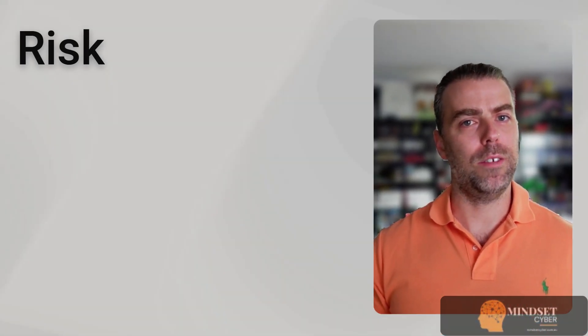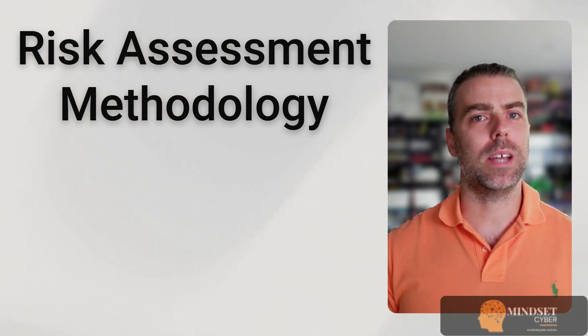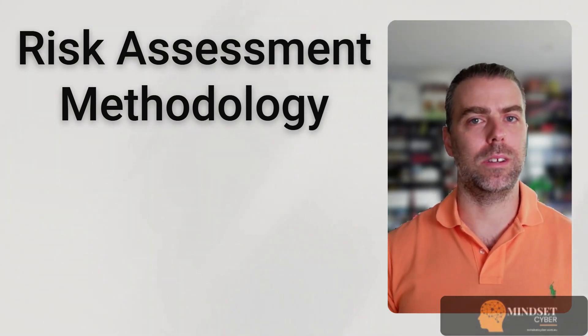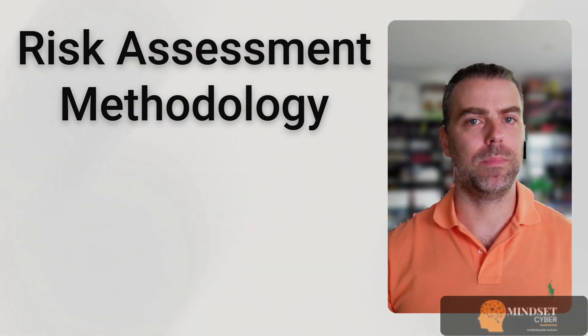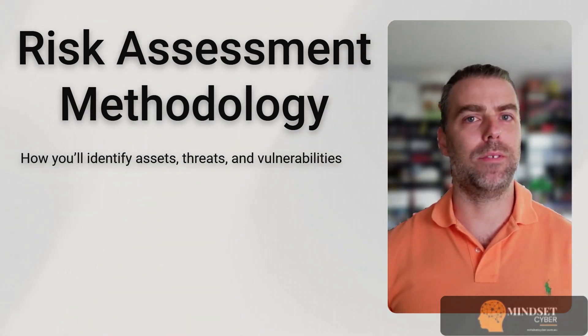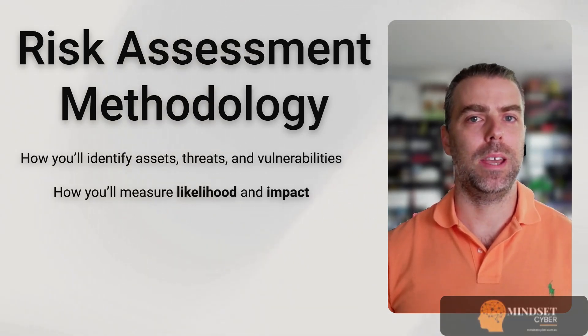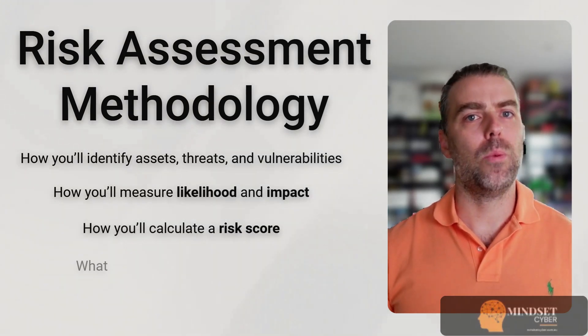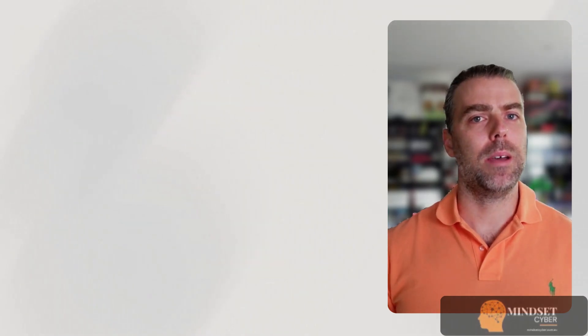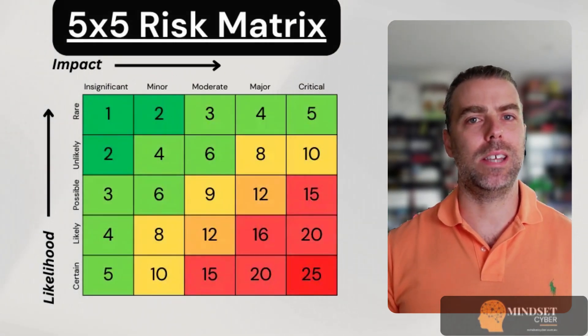Now we're moving into the engine room of your ISO 27001 implementation — the risk assessment and treatment process. Clause 6.1.2 is where ISO 27001 shows its true nature. It's not about blindly applying controls; it's about understanding and managing risk to your organisation's information. The first step is to establish a risk assessment methodology: document a consistent way to assess risk, defining how you'll identify assets, threats, and vulnerabilities, how you'll measure likelihood and impact, how you'll calculate a risk score, and what your risk acceptance criteria are. Most organisations use a five-by-five risk matrix.